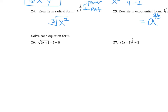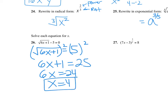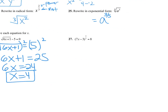Numbers 26 and 27 — for the most part people are good at these. Show work on the test because partial credit is given for mistakes. Add 5 to the other side, then square both sides to eliminate the square root. You get 6x plus 1 equals 25. Subtract 1, divide by 6 — x is 4. You can check your answer if you want.